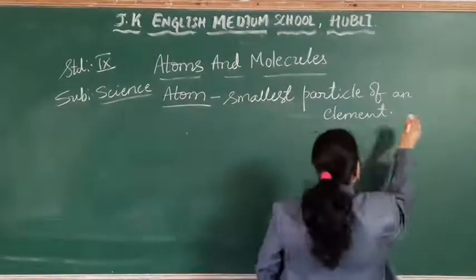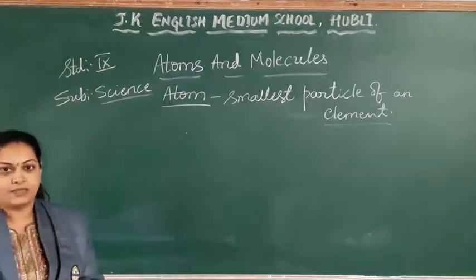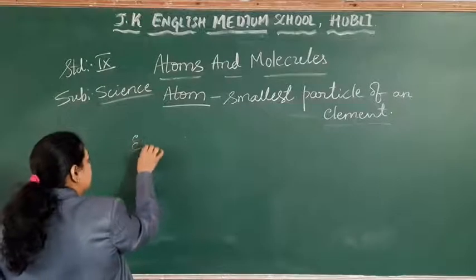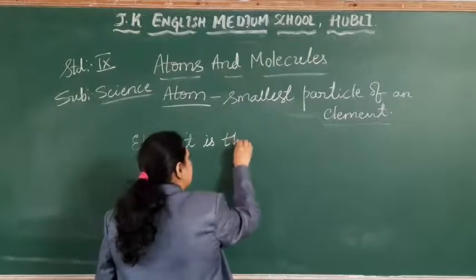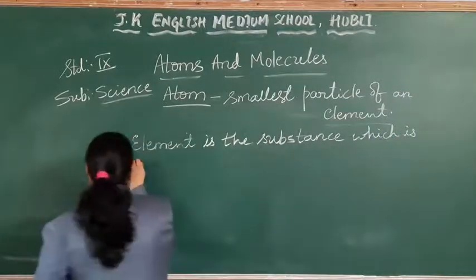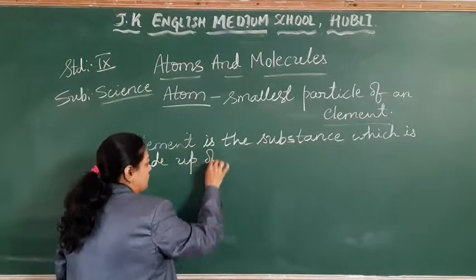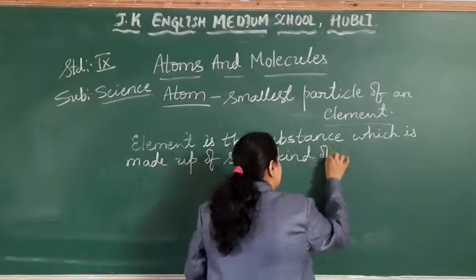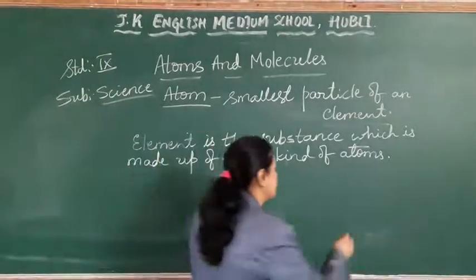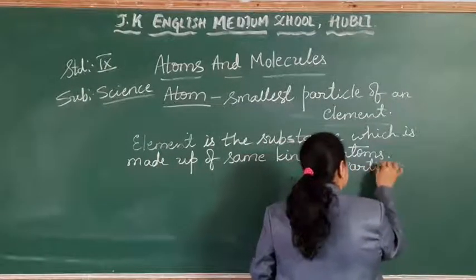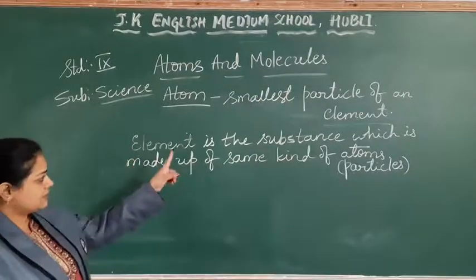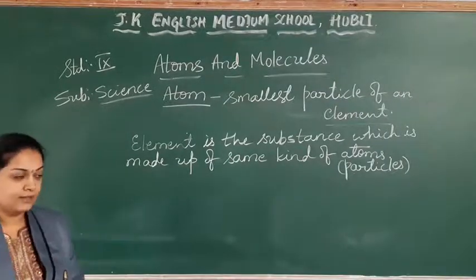Now the question comes: what is the meaning of element? Element is the substance which is made up of same kind of atoms — same kind of particles. Particles are nothing but the atoms as we know now. So, element is the substance which is made up of same kind of particles.